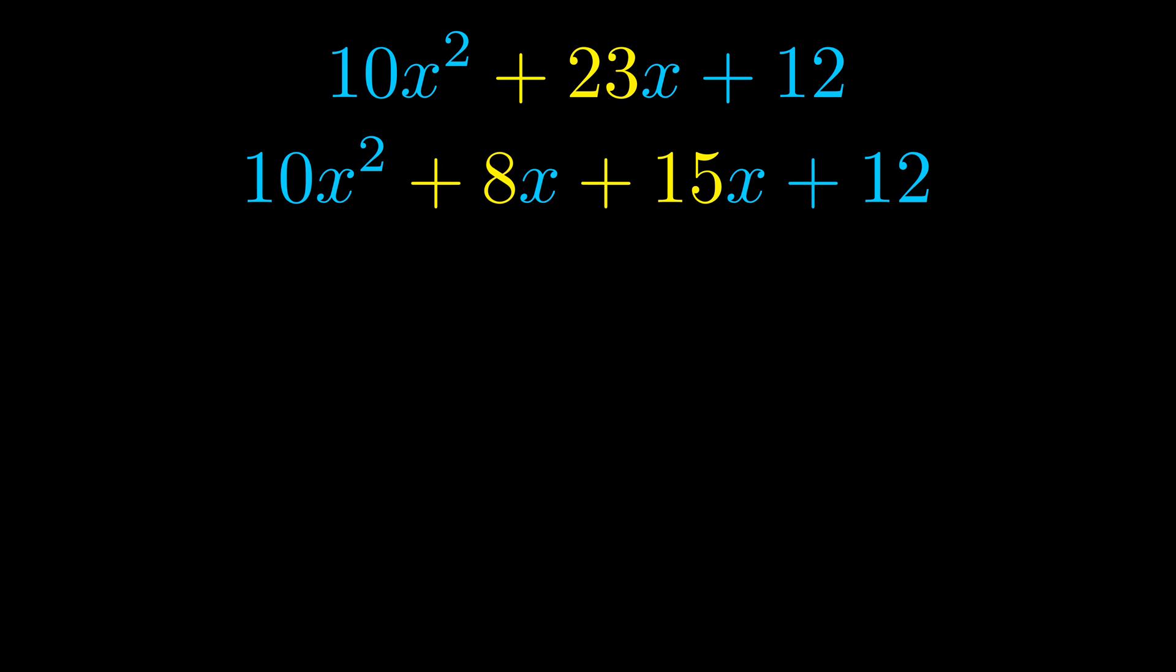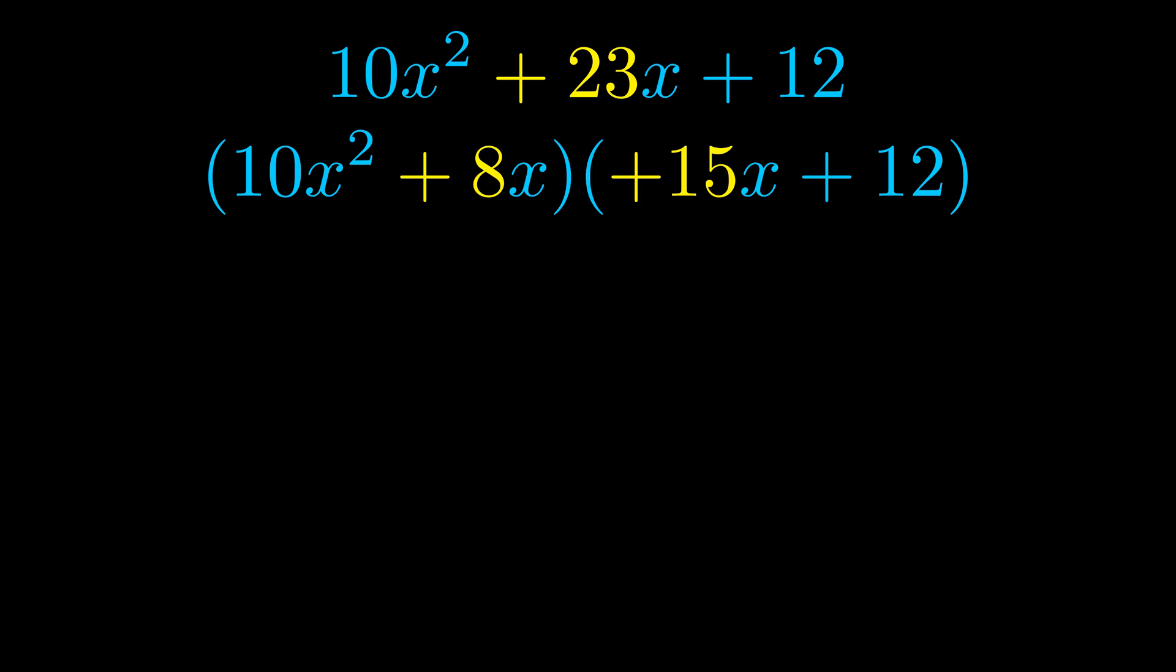Once we've done this we go ahead and we put parentheses around the first term and the last term. And we do that so that we can take the greatest common factor out of both terms. We can see the greatest common factor is now outside in green.